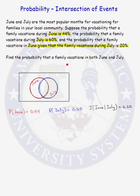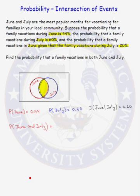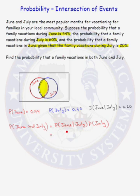Writing it as a probability statement, we want to find the probability of vacationing in June and July — that overlapping region in the Venn diagram. Using the intersection formula, this equals P(June | July) × P(July). P(June | July) is 20% and P(July) is 60%. So the probability of vacationing in both June and July is 12%.